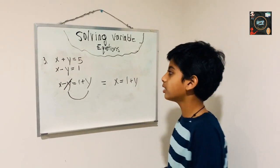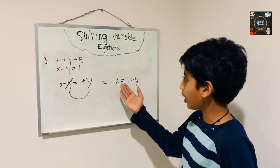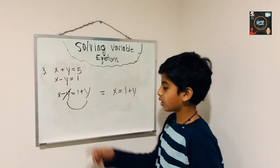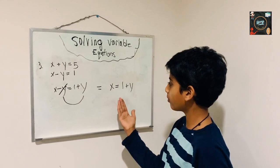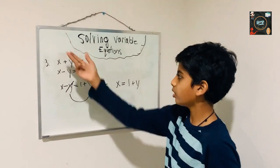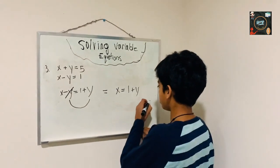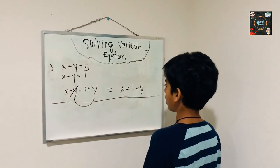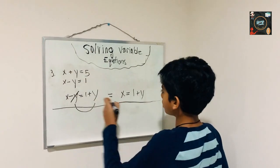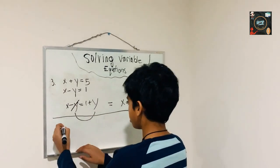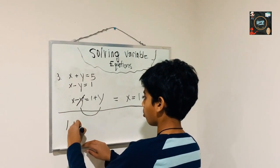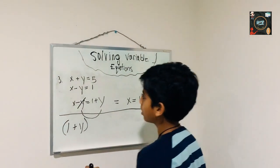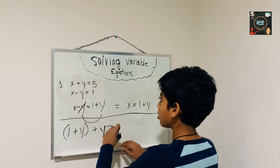Now what we have to do is substitute the x value into the first equation. We used the second equation to find what x equals, and now we have to apply that to the first equation. So substituting x into the first equation gives us: 1 plus y plus y equals 5.